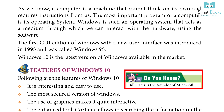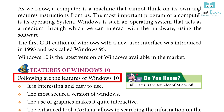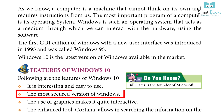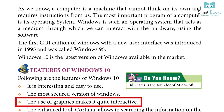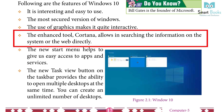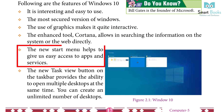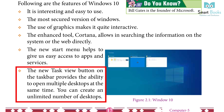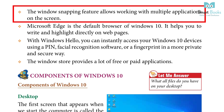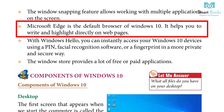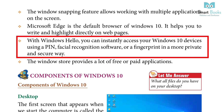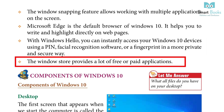Bill Gates is the founder of Microsoft. Features of Windows 10: It is interesting and easy to use. It is the most secure version of Windows. The use of graphics makes it quite interactive. The enhanced tool allows searching for information on the system or the web directly. The new start menu helps to give easy access to apps and services. The new task view button on the taskbar provides the ability to open multiple desktops at the same time. You can create an unlimited number of desktops. The window snapping feature allows working with multiple applications on the screen. Microsoft Edge is the default browser of Windows 10, helping you write and highlight directly on web pages. With Windows Hello, you can instantly access your Windows 10 devices using a pen, facial recognition software, or a fingerprint in a more private and secure way. The Windows Store provides a lot of free or paid applications.